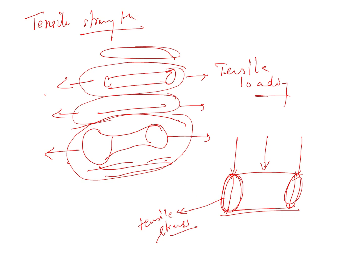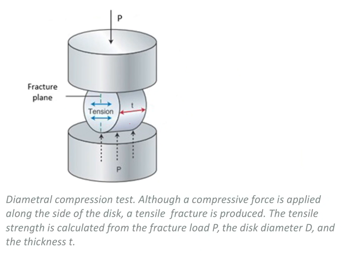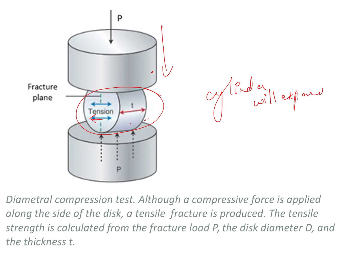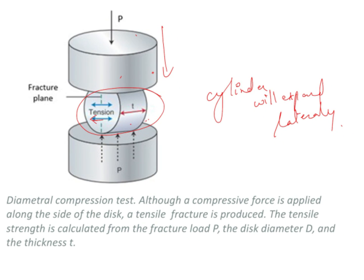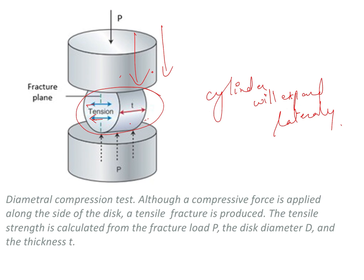The load generates tensile stress perpendicular to the vertical plane passing through the center of the disc. Here we can see the disc with the applied load along the diameter. Tension is being generated at the line perpendicular to the diameter. In response to this applied load, the tension generated leads to lateral expansion of the cylinder.